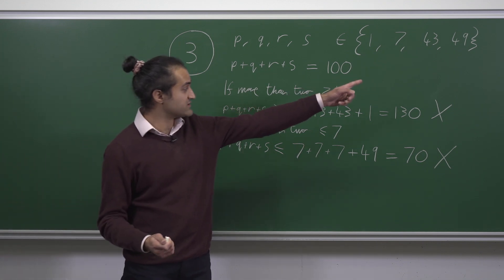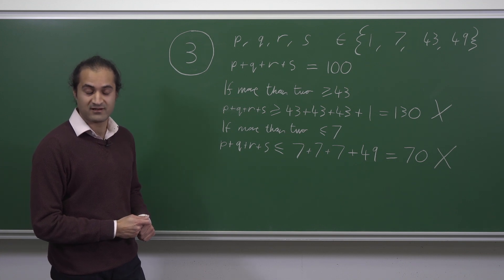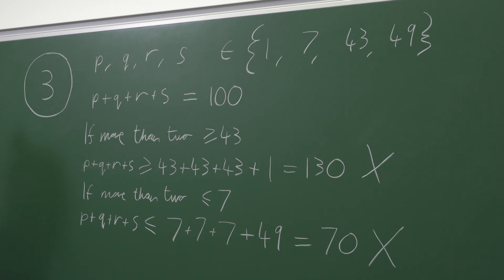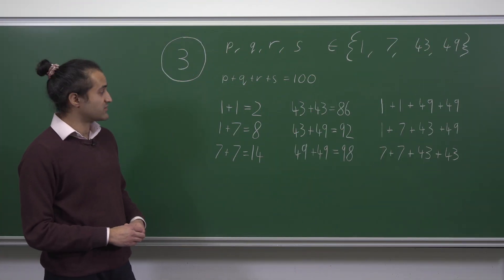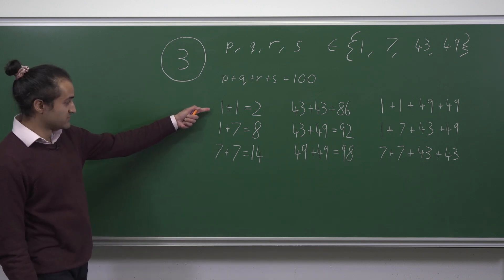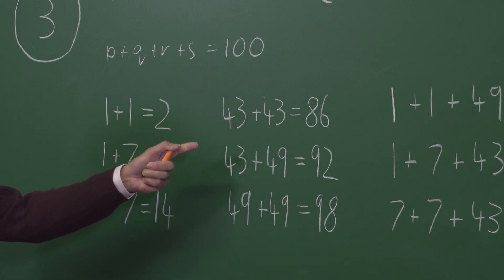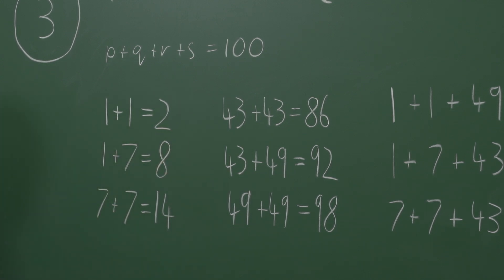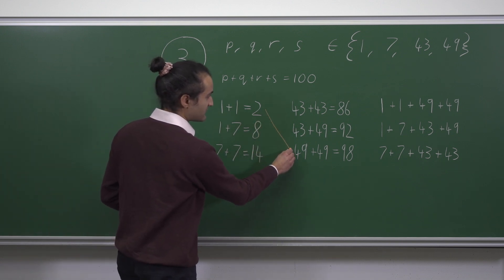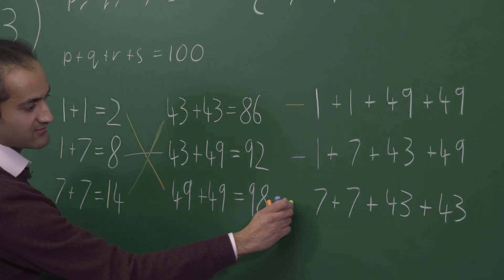So we cannot have more than two large numbers and we cannot have more than two small numbers. We must have exactly two of P, Q, R, S being 1 or 7, and exactly two being 43 or 49. The two small values can sum to only 2, 8, or 14. The two large values can sum to only 86, 92, or 98. The only combinations summing to 100 are: 2 + 98, 8 + 92, and 14 + 86 — giving the three valid solutions.